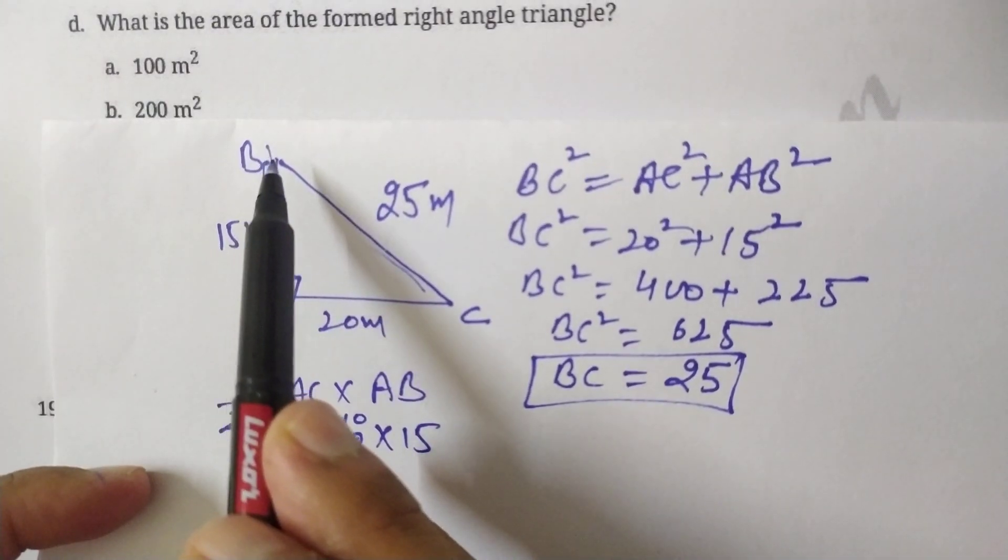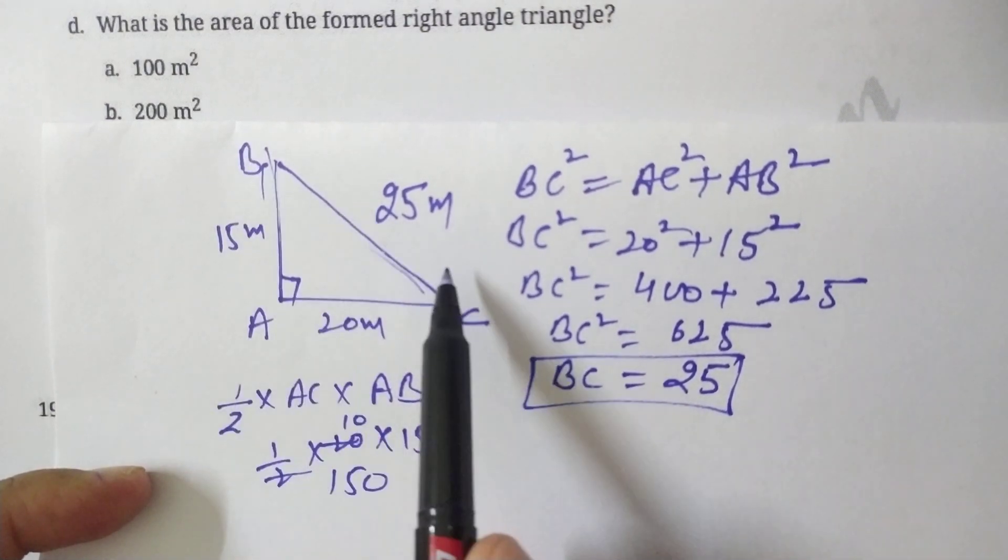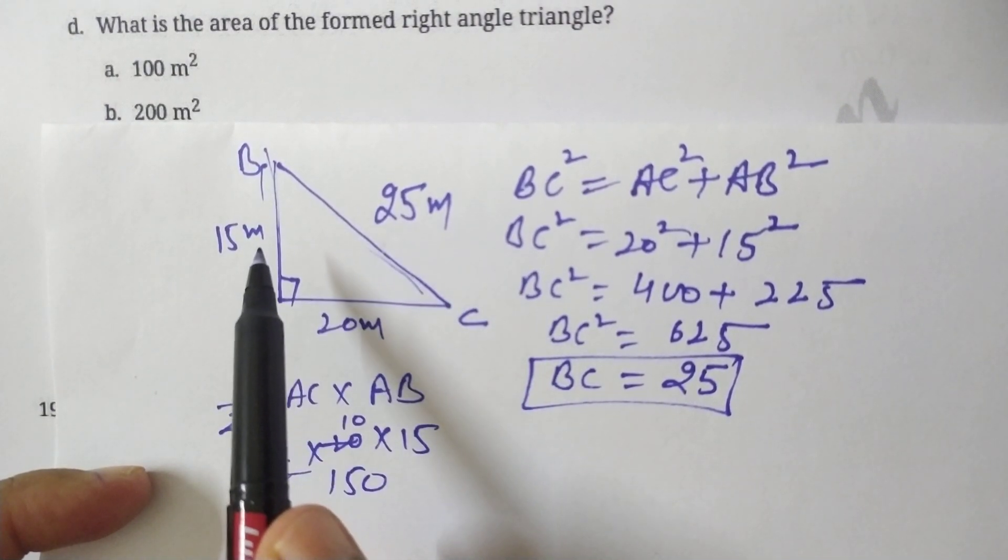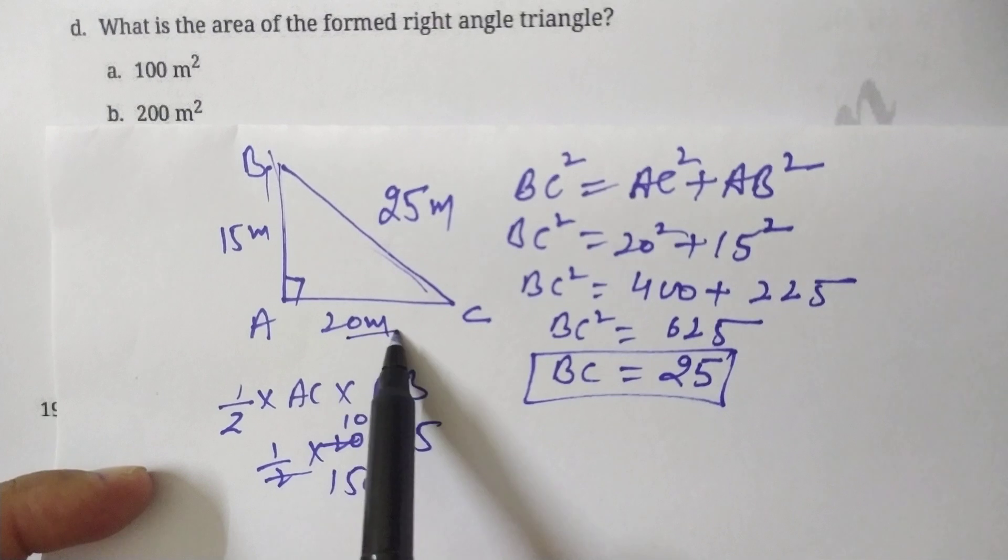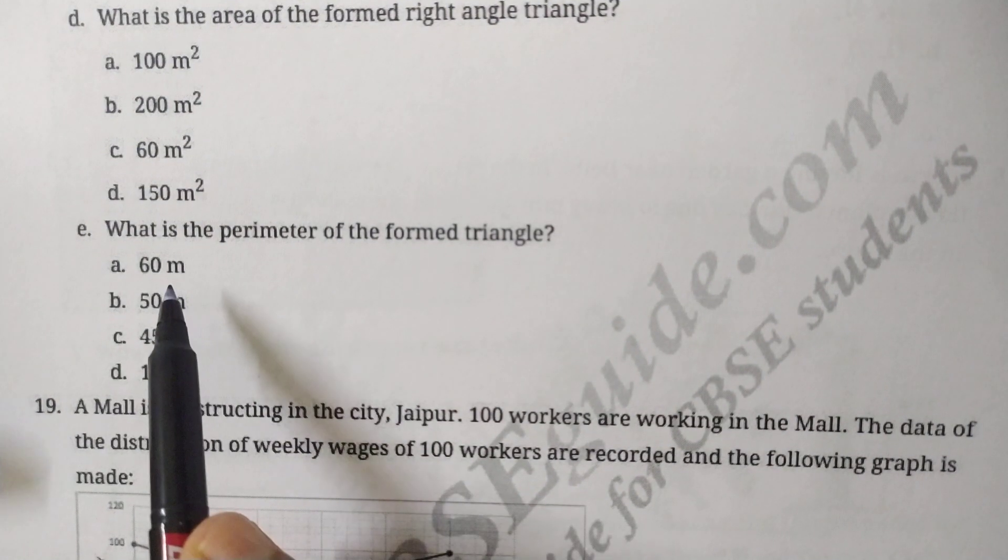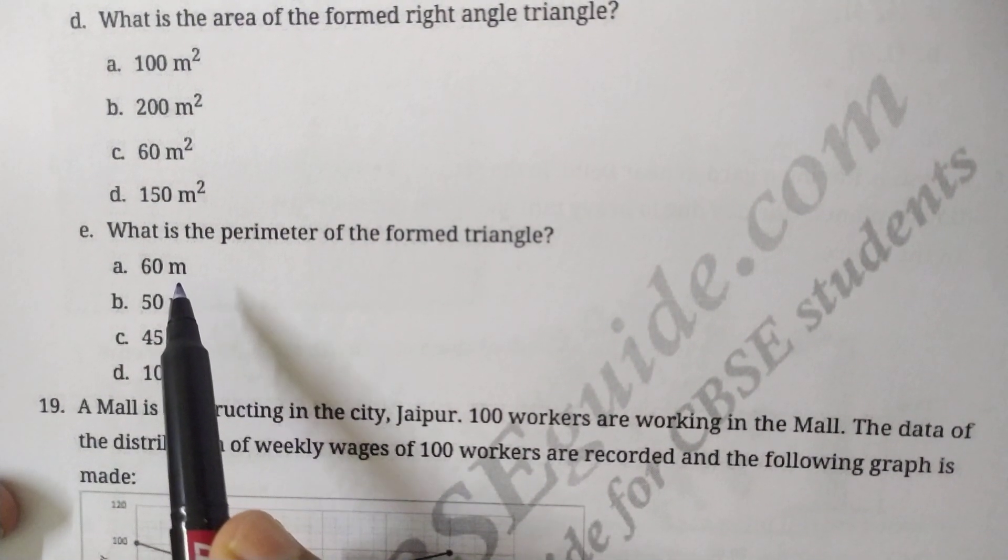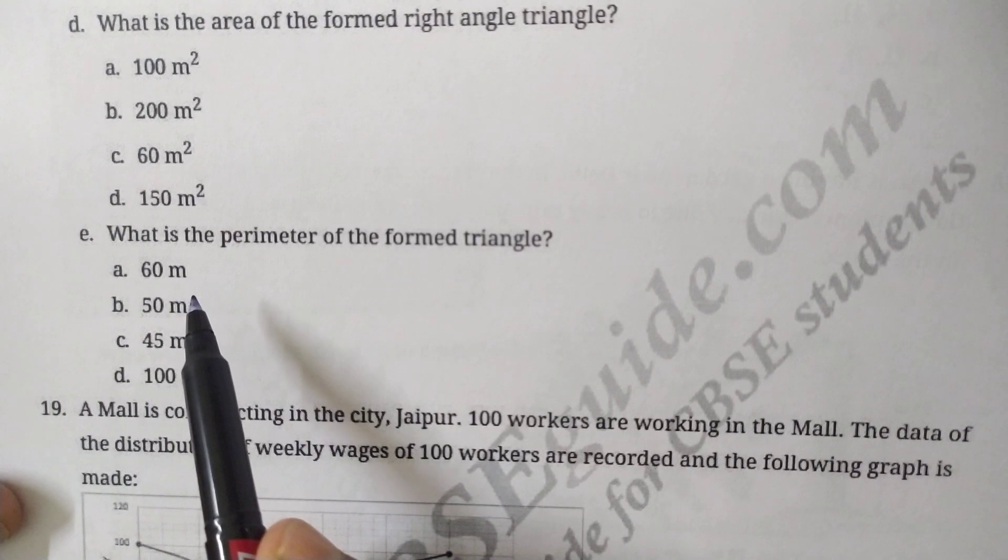Next: what is the perimeter of the formed triangle? Perimeter is the sum of all sides: 25 + 15 = 40, and 40 + 20 = 60. So 60 meters is the perimeter. This is how we solve this question. Thanks for watching.